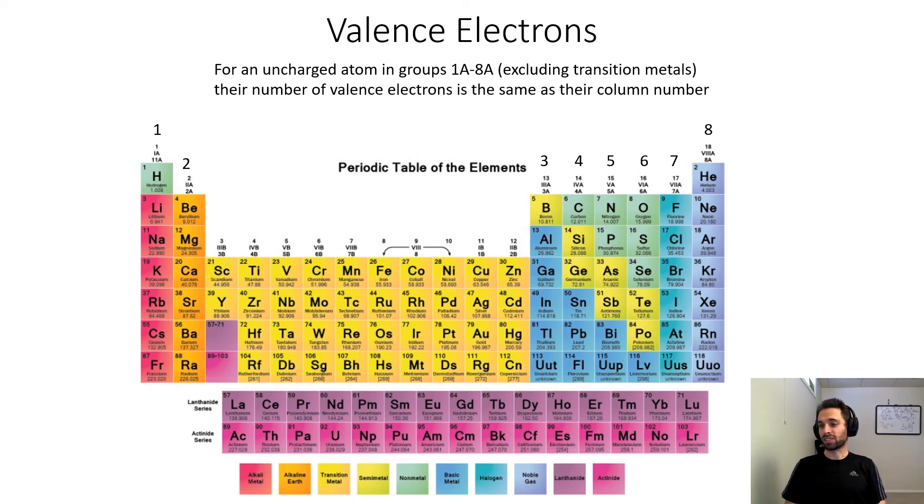All the other atoms like neon, argon, krypton, xenon, and radon, these all have eight valence electrons. For example, neon would have eight valence electrons and it would have two core electrons.